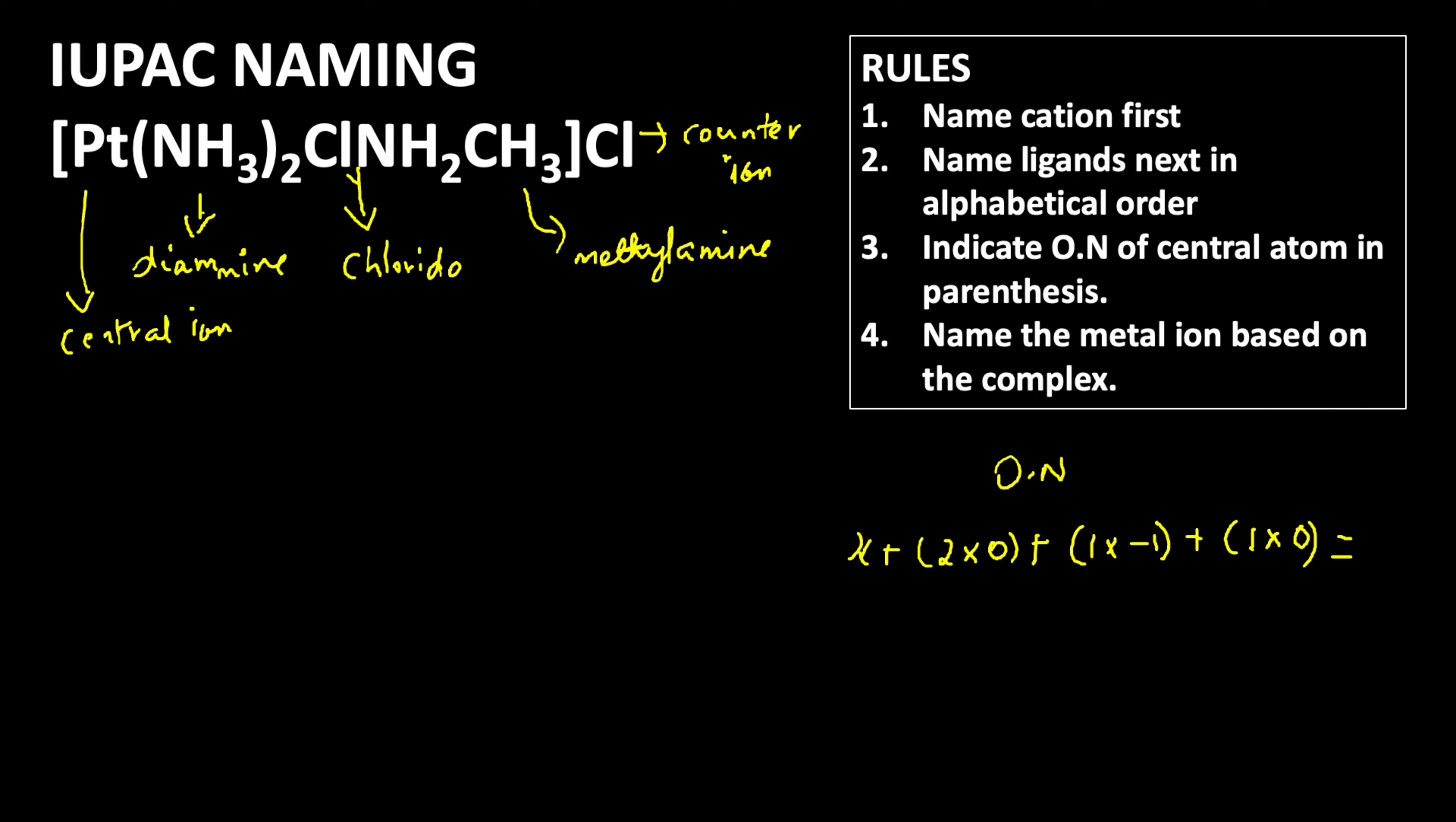The net charge of this cation is plus one. So if you keep x then minus one plus one.